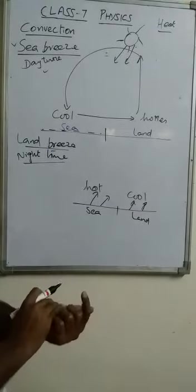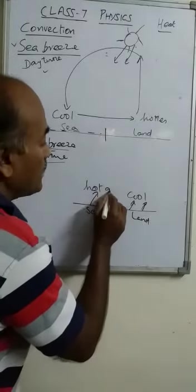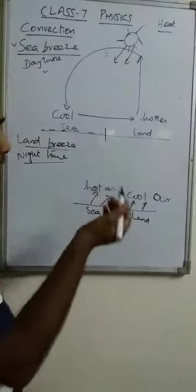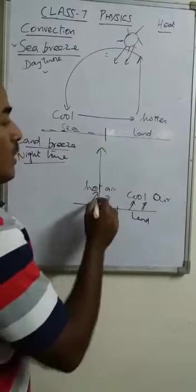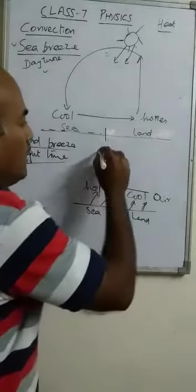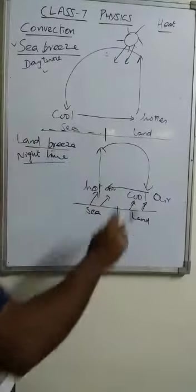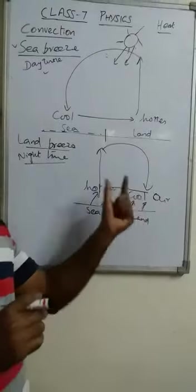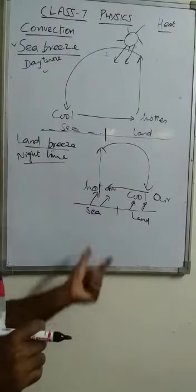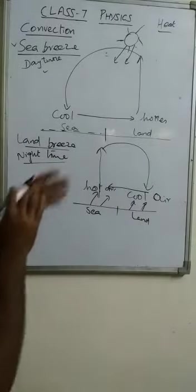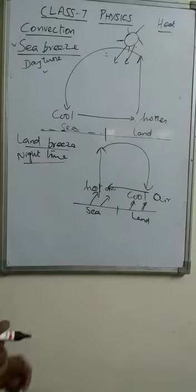Now the reverse situation takes place — over the sea surface the air is hotter and over the land surface the air is cool. Once again the same process: the hot air rises up and the cool air blows from land to sea. In this process also, heat is transferred from hot to cold, so here also convection takes place. This blow of cool air from land to sea during nighttime is known as land breeze. These are also examples of the convection process.